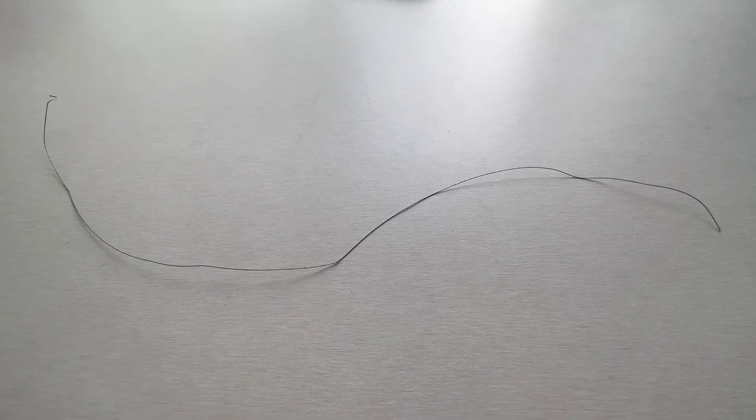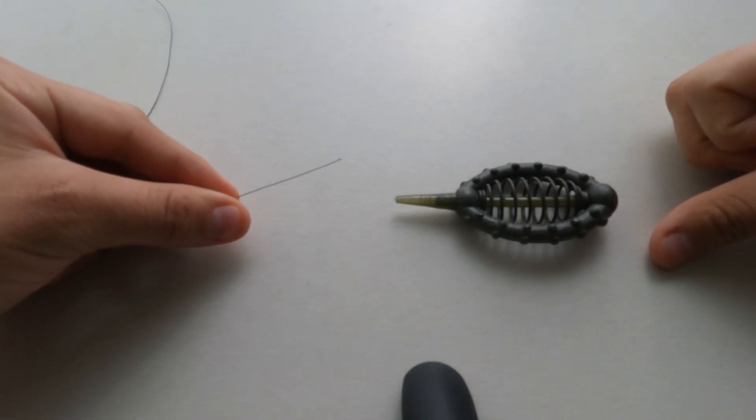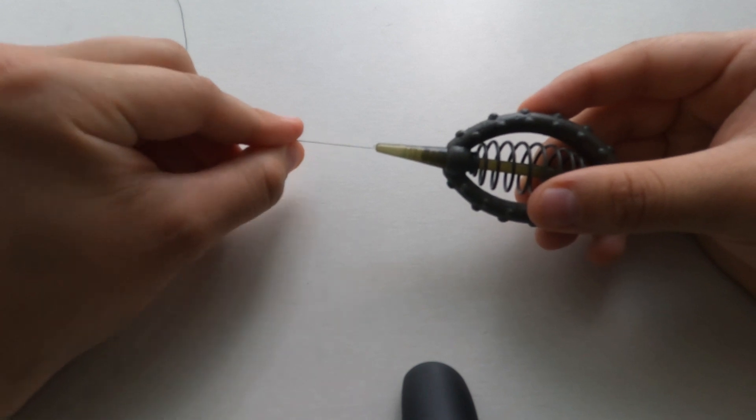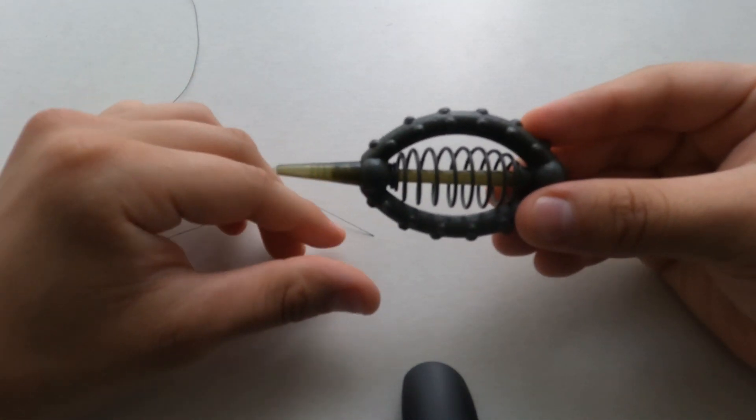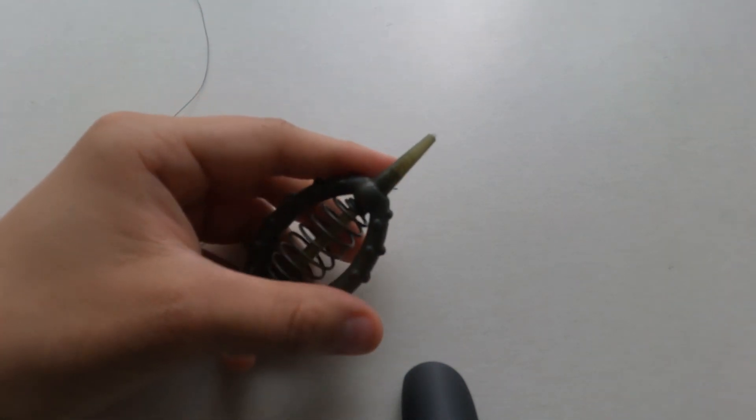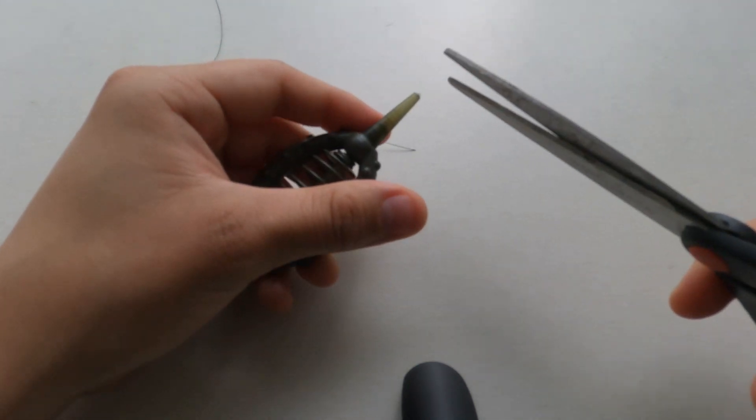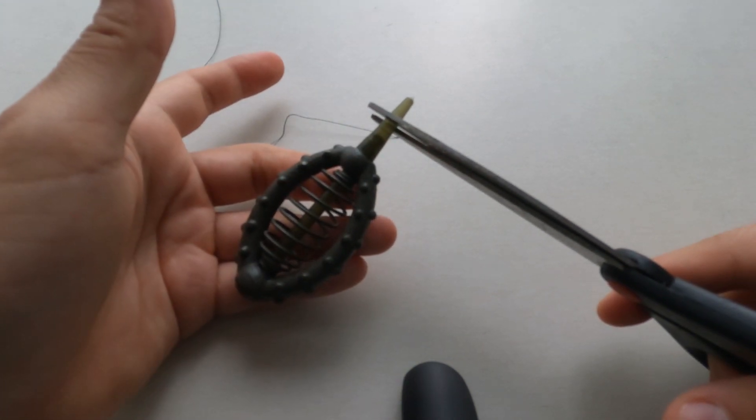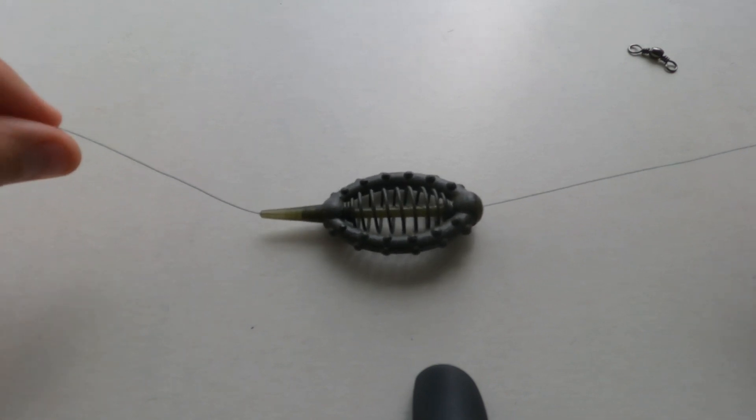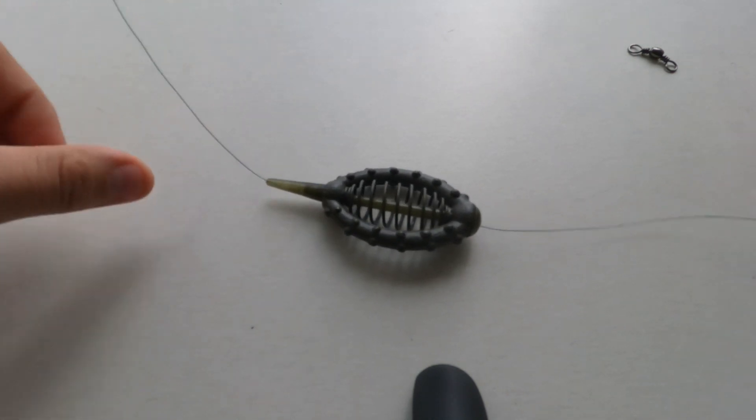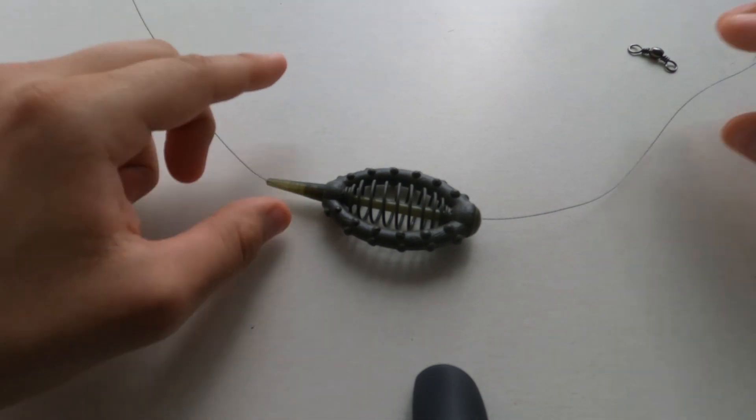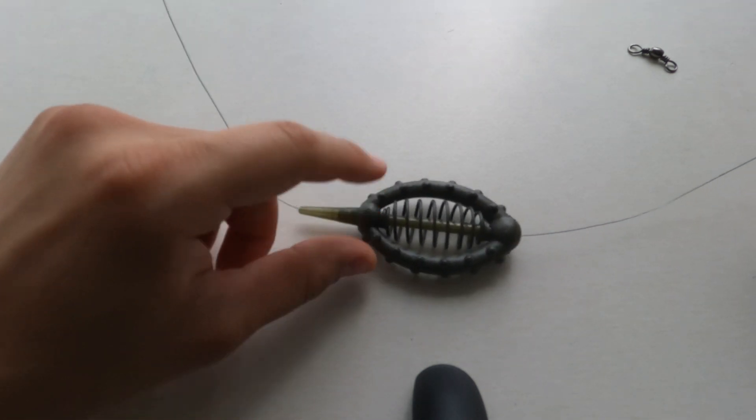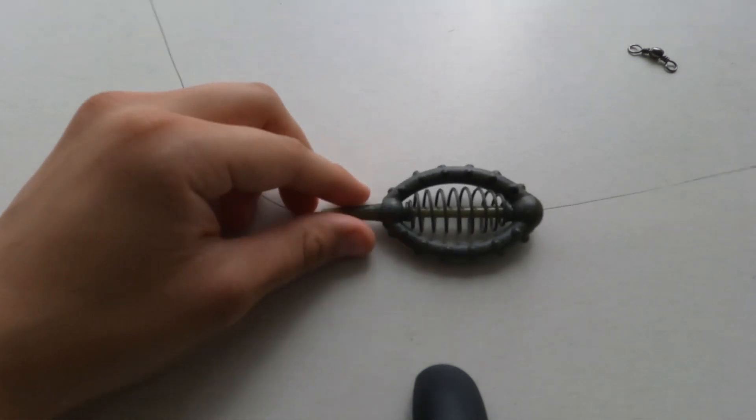To start off you want to run the line through the method feeder. Sometimes I struggle and you might struggle too with this method feeder, but a hack that I have is I usually like to cut this around right there just so the line goes in easier. In this instance since I have a new pole and brand new line I didn't have to cut it, but in future reference if your method feeder is stuck or snagged you'll probably need to cut that.